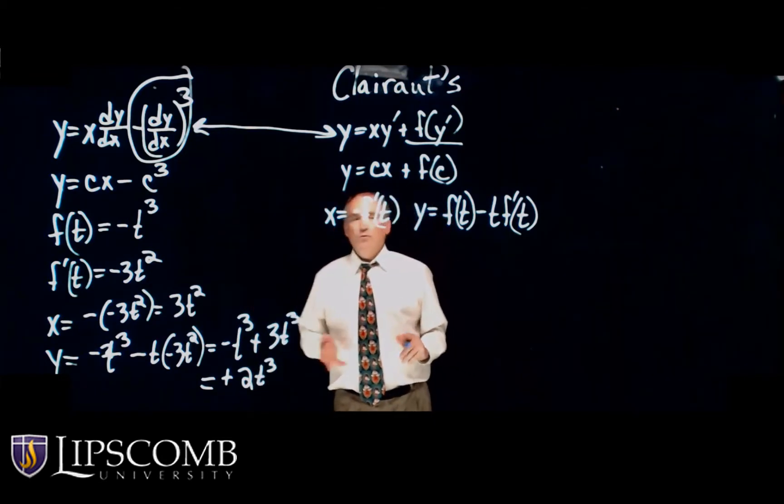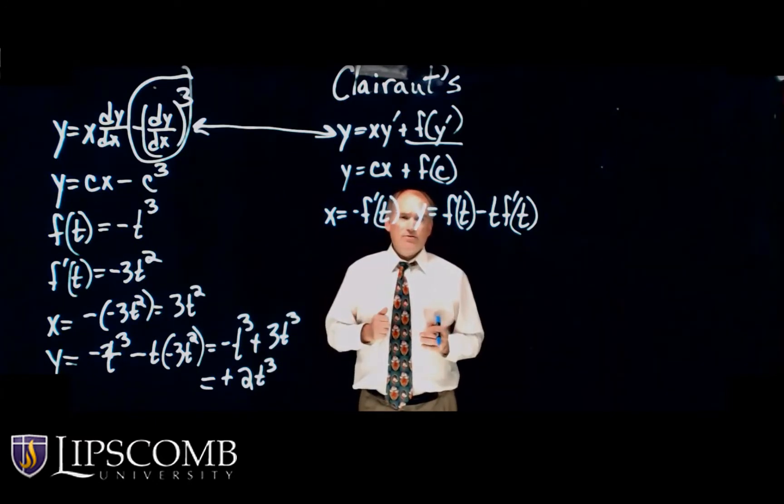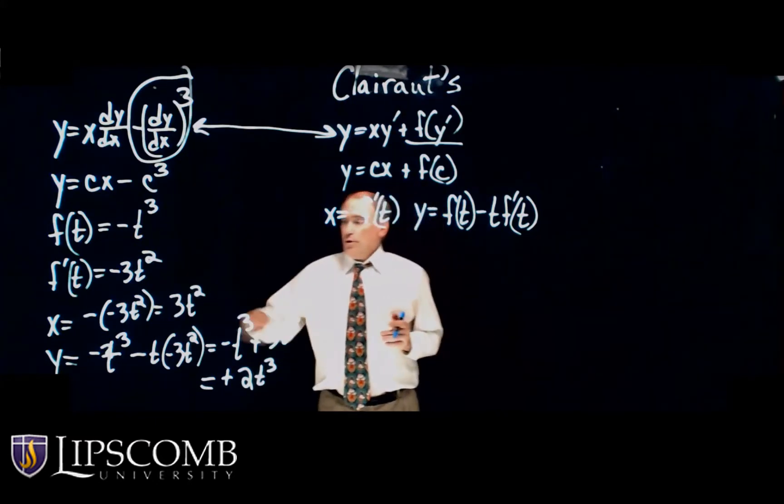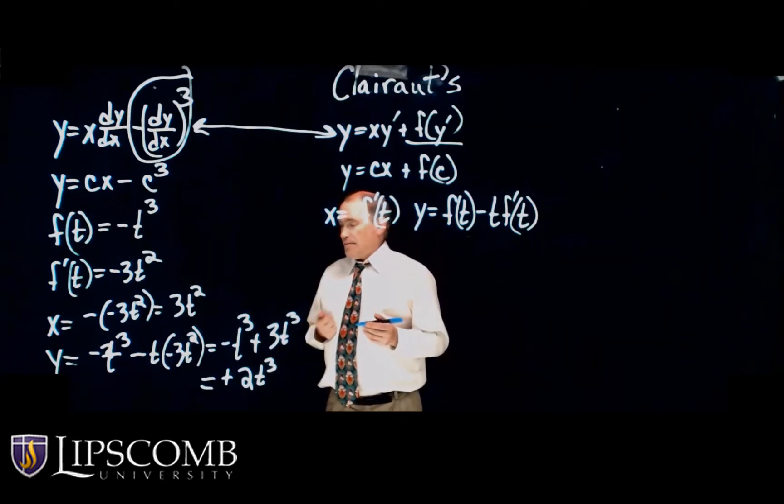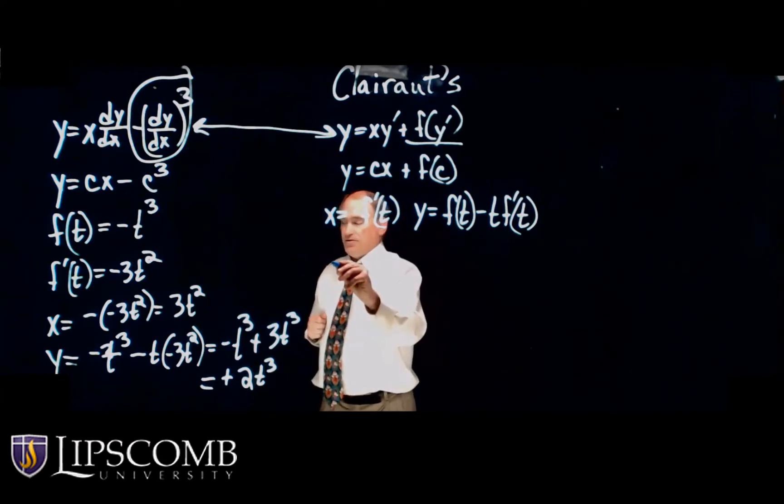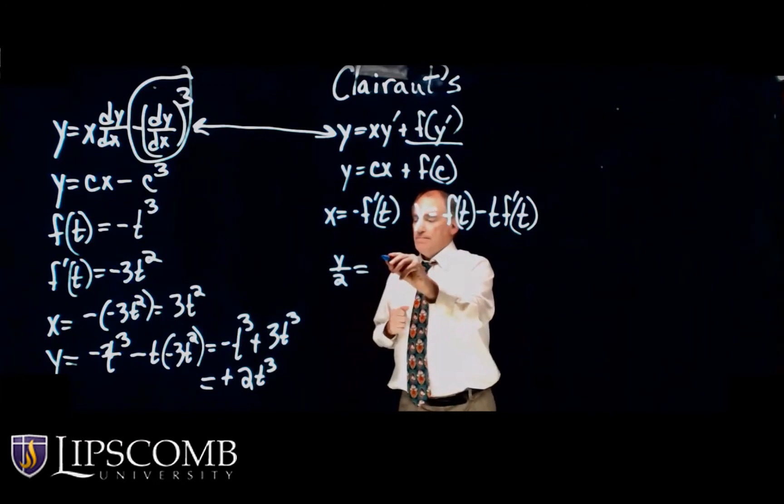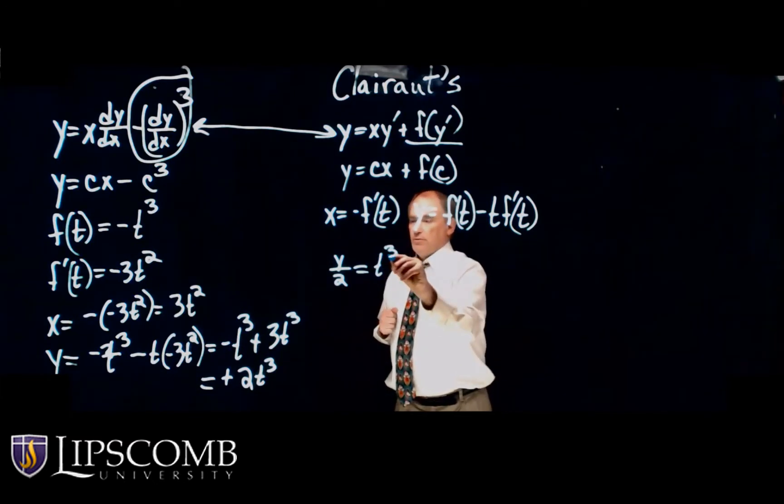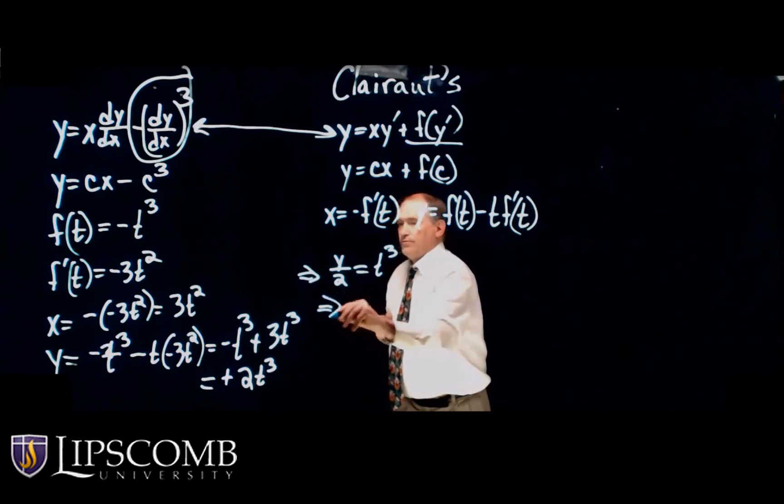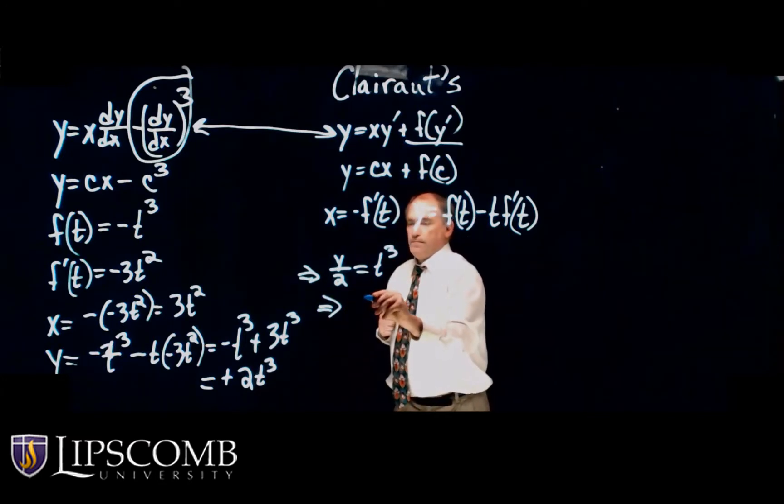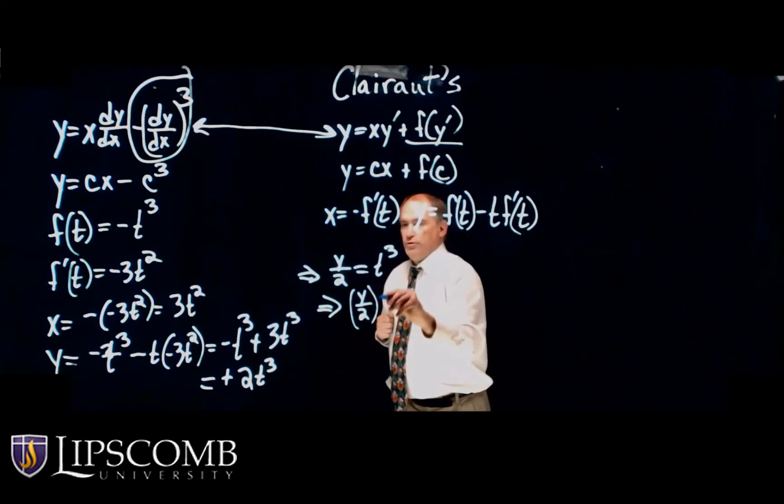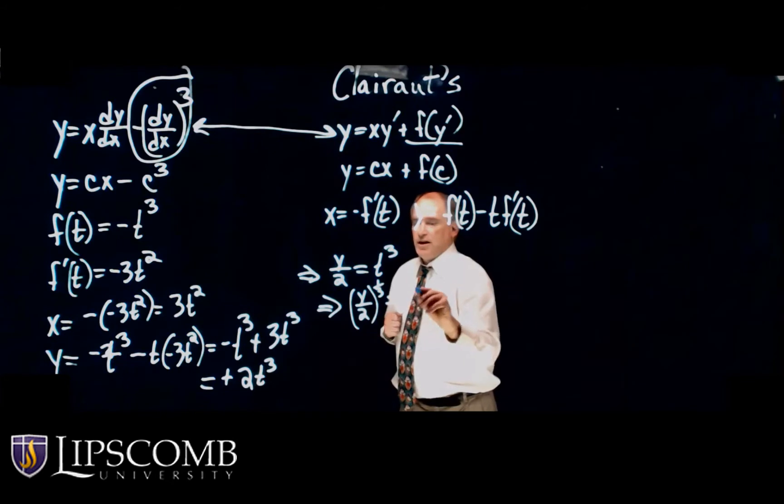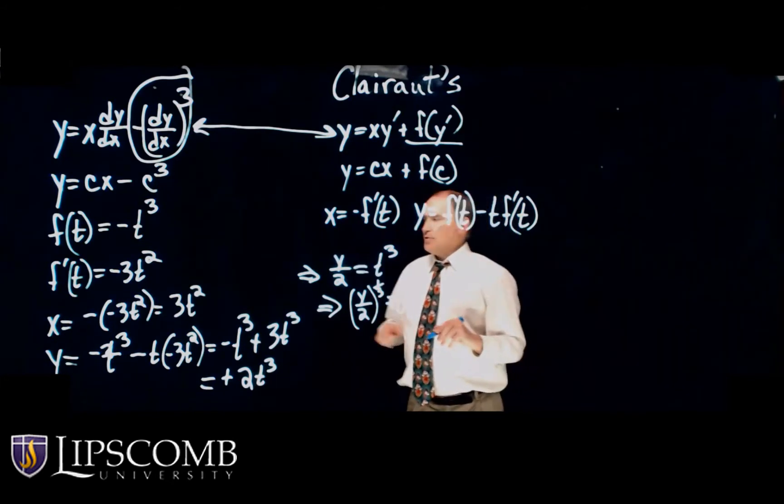So now we can use what we did back in Calculus 2. We can take one of these and solve for T. Well, how about if I just take this one. And so we've got Y over 2 equals T cubed. So cubed root, so this would be Y over 2 cubed root equals T. Well, I can plug that into X.